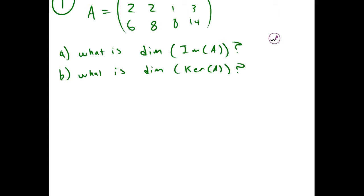I'm going to take row 1 divided by 2. I'm going to get 1, 2, 3, 4, then 2, 2, 1, 3, and 6, 8, 0, 14.